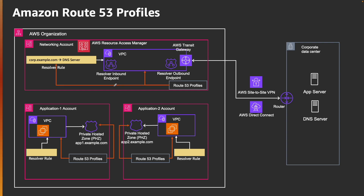Third, we associate the resolver rules with the Route 53 profile as well. We can then remove the direct VPC association of these rules. There is no rule directly associated, but there is one associated through the Route 53 profile, so it takes the same path — the request goes to the corresponding outbound resolver endpoint, which checks where to send the request and resolves it against the on-prem DNS server. Now we just have a Route 53 profile shared across the organization across all accounts, and you simply associate the profile with the private hosted zones and VPCs and you're done.